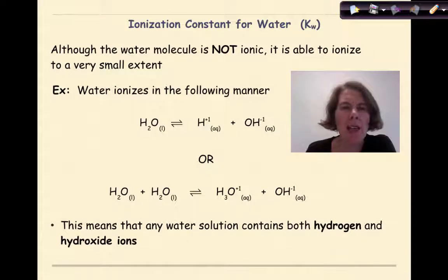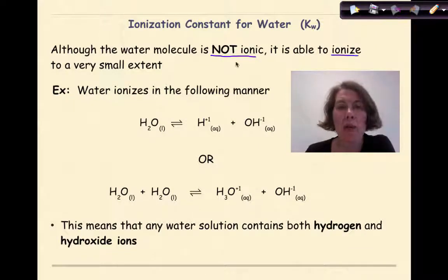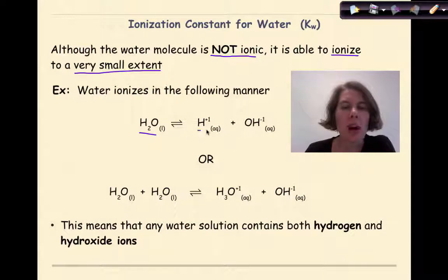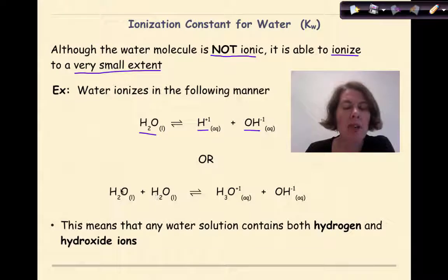Let's start out by talking about the ionization constant for water. Although the water molecule is not ionic, it is able to ionize or form ions to a very, very small extent. Water ionizes in the following manner. We can have H2O liquid breaking down in a reversible reaction to hydrogen ions and hydroxide ions, or we can look at it in terms of two water molecules where one water molecule donates its hydrogen to the other to make the hydronium ion and the hydroxide ion.